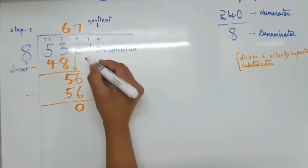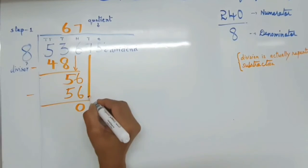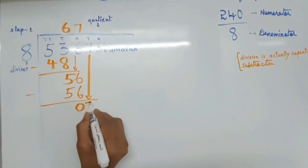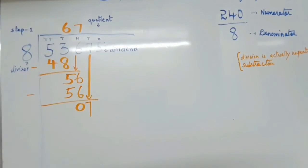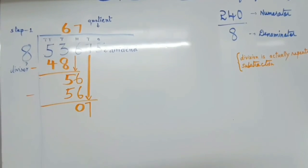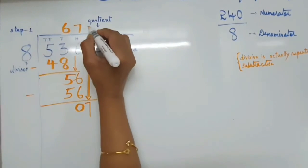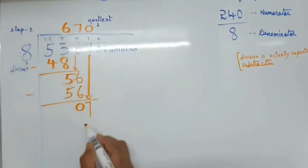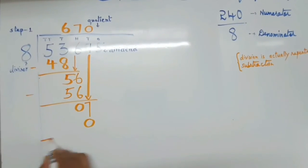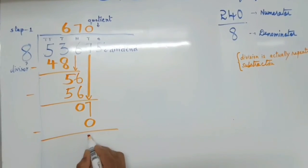Now what is our next digit? Our next digit is 7. We have to bring down 7. Now it becomes 7, which is lesser than the divisor. So what we have to do? We have to count 8 zeros are 0. Then we have to subtract again. So 7 minus 0 is 7.